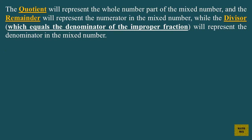The quotient will represent the whole number part of the mixed number, and the remainder will represent the numerator in the mixed number, while the divisor, which equals the denominator of the improper fraction, will represent the denominator in the mixed number.